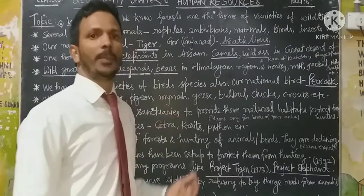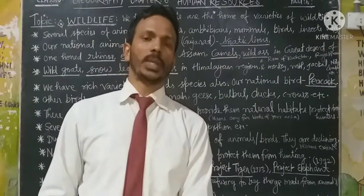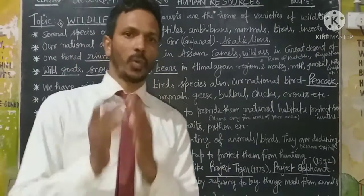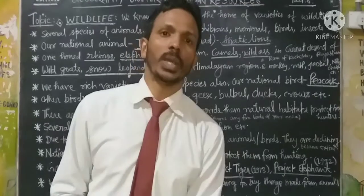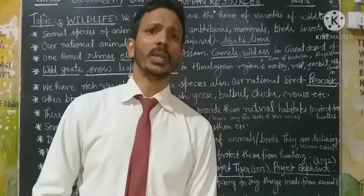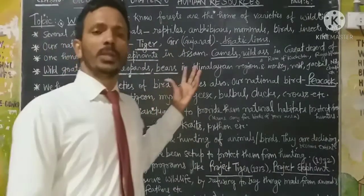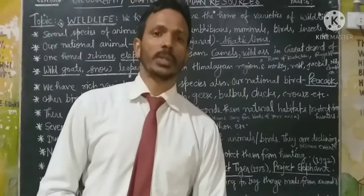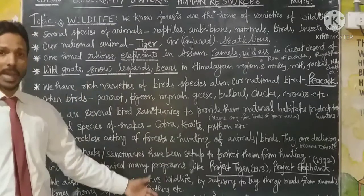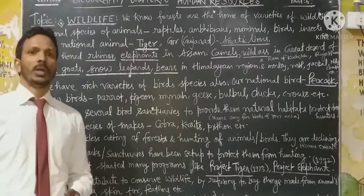Not only do we have plant or flora species, but also we have fauna — that means the animal species. Students, you know we have thousands of species of animals like reptiles, amphibians, mammals, insects, worms, birds, etc.